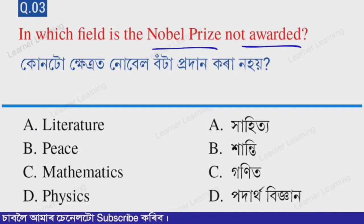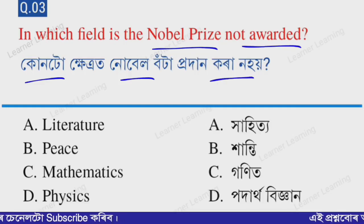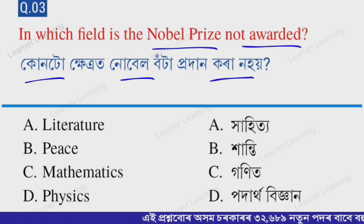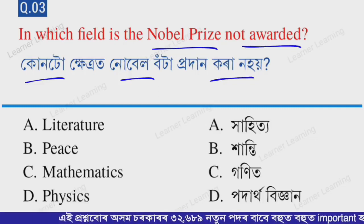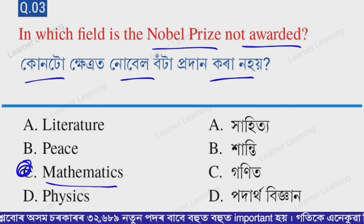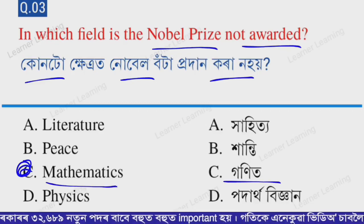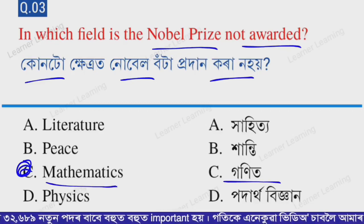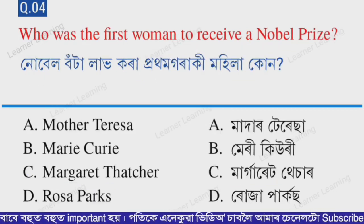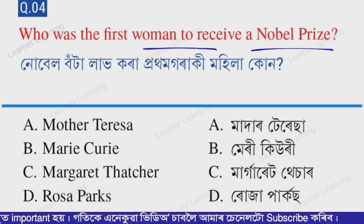Next question: In which field is the Nobel Prize NOT awarded? Options are: A — Literature, B — Peace, C — Mathematics, D — Physics. The correct option is option C — Mathematics. The Nobel Prize is not awarded in Mathematics.